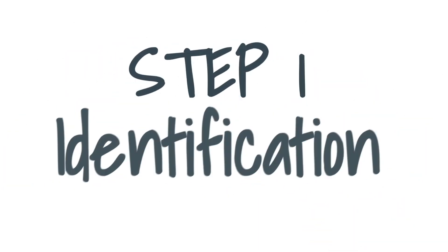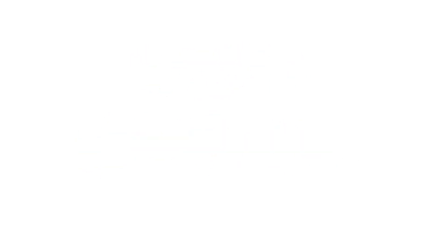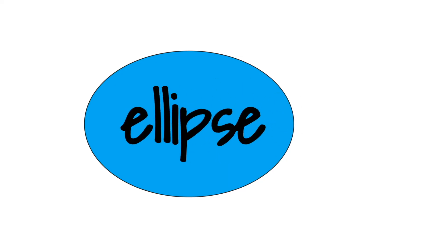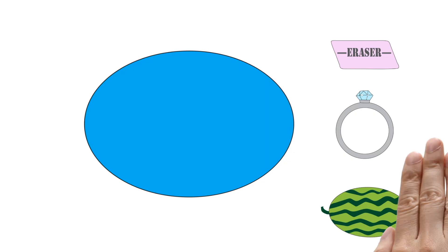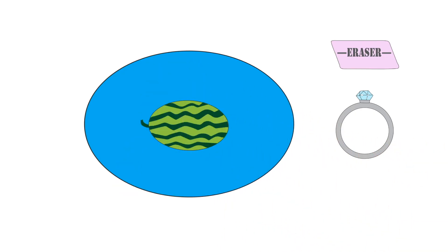Let's learn the shapes ellipse, oval and quatrefoil. This is an ellipse. Can you see an object that is shaped like an ellipse? A watermelon is shaped like an ellipse. Ellipse.